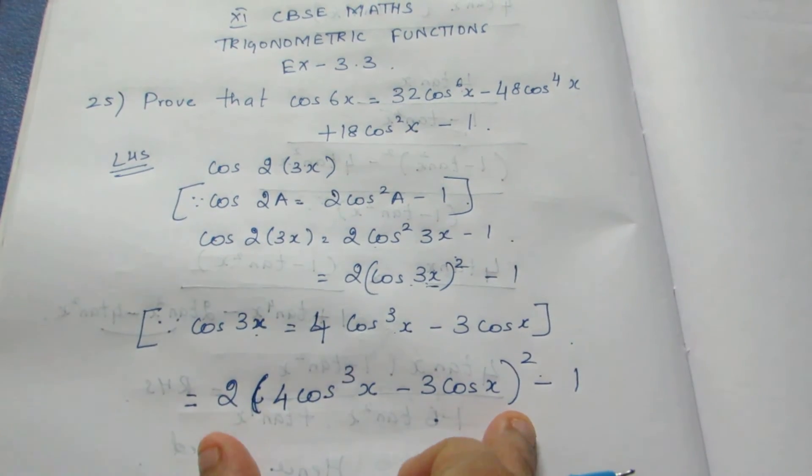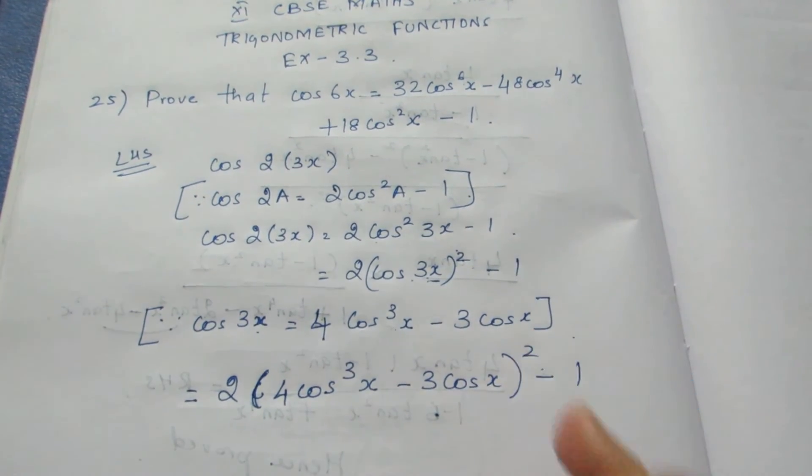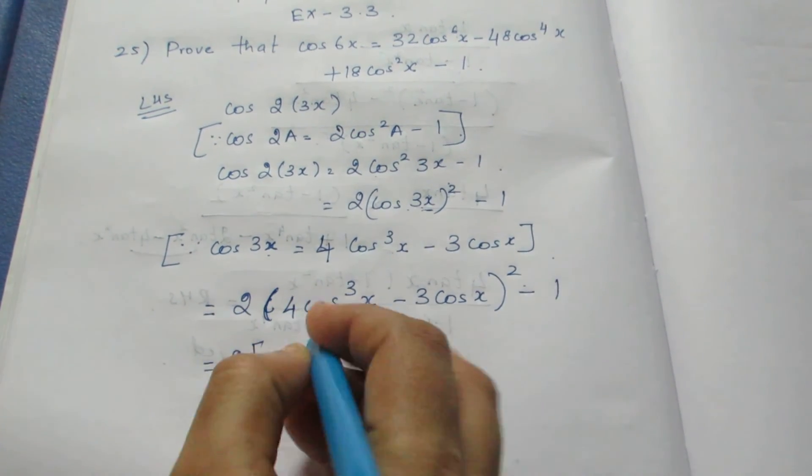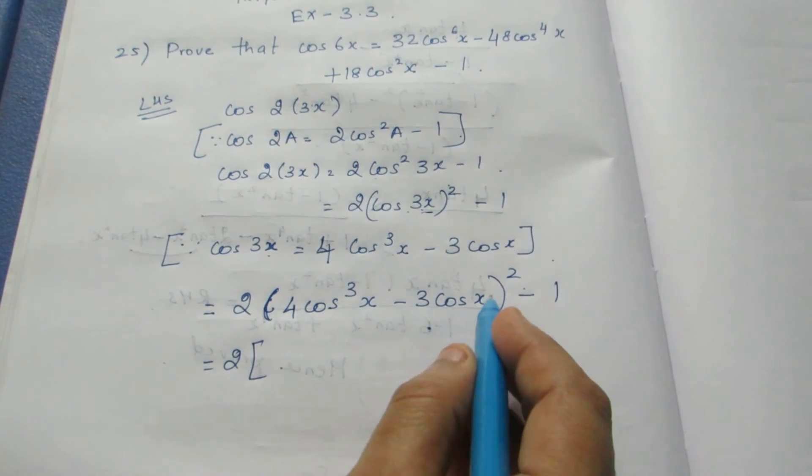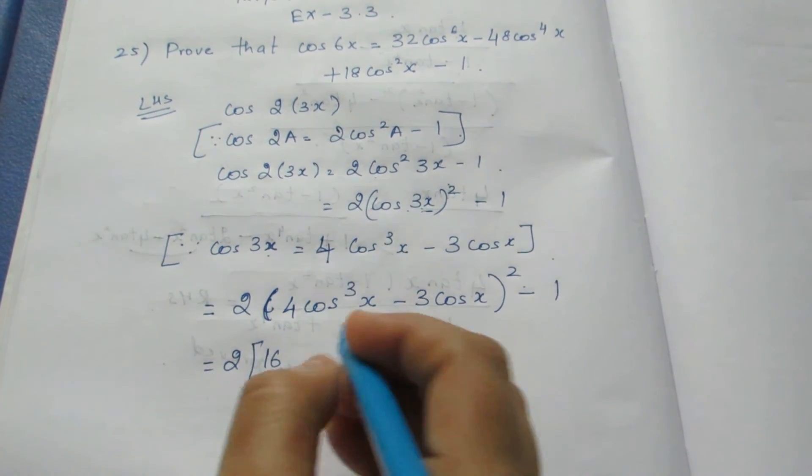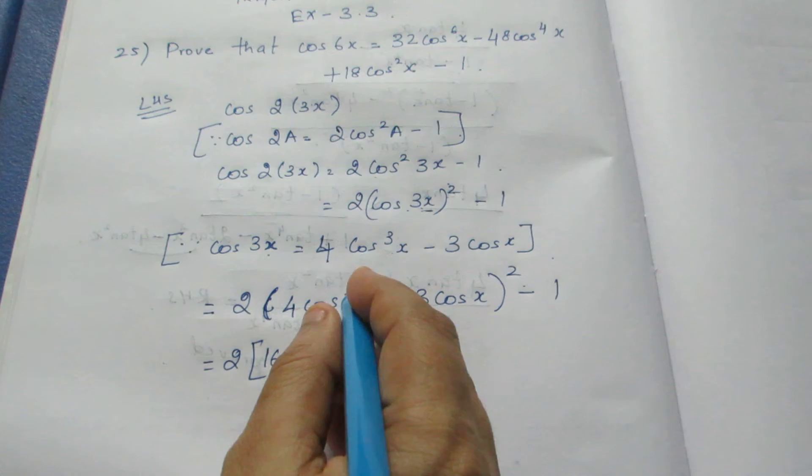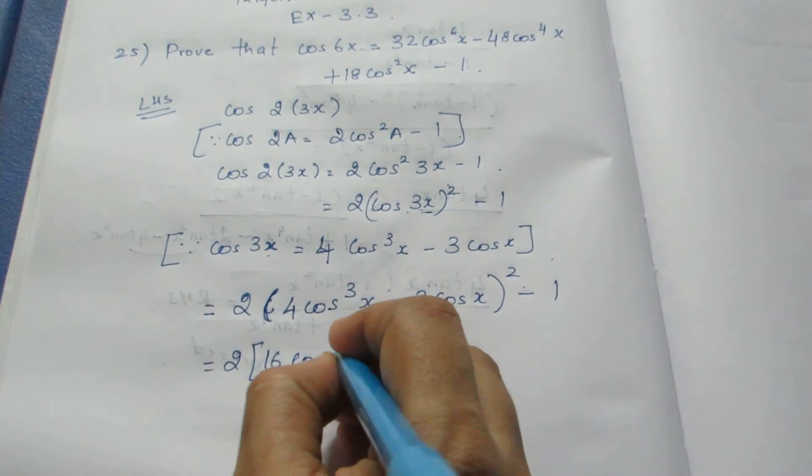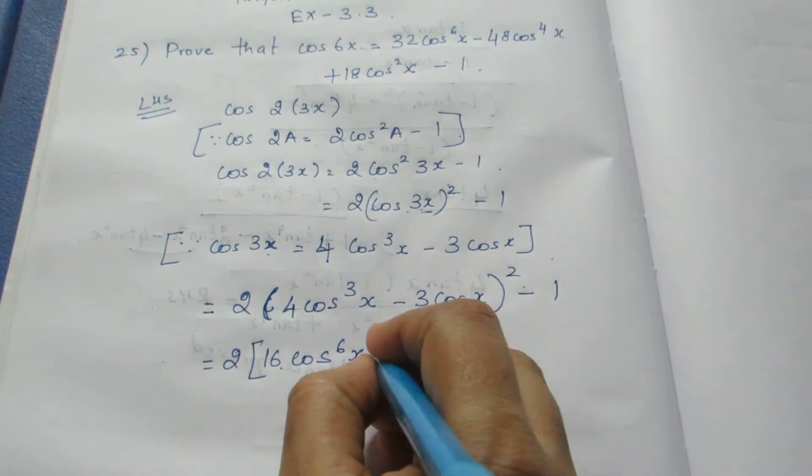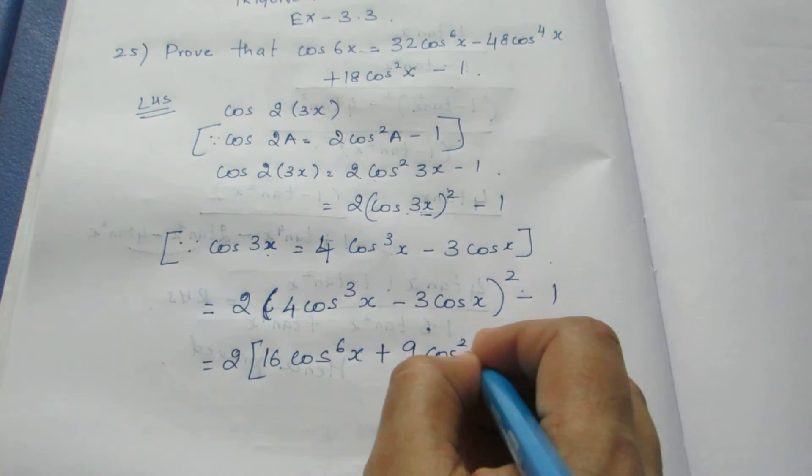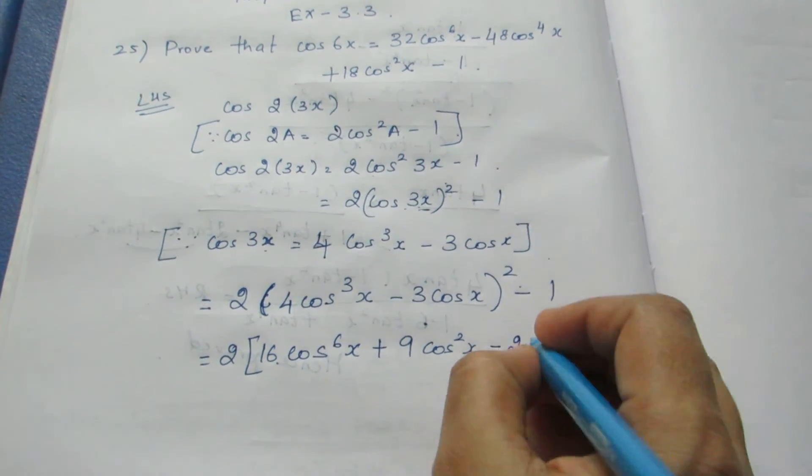This is the identity of (a minus b) whole square, so I need to use the identity 2 into (a² plus b² minus 2ab). So a² is 4² which is 16 cos⁶x, plus this square will become 9 cos²x, minus 2ab.